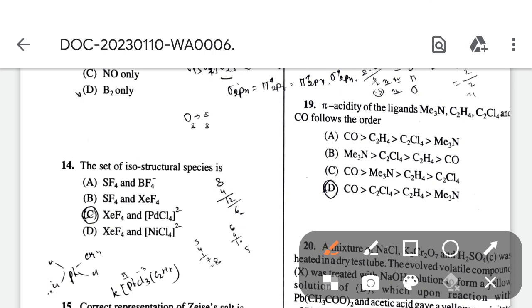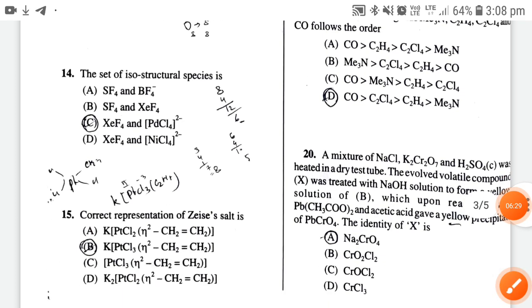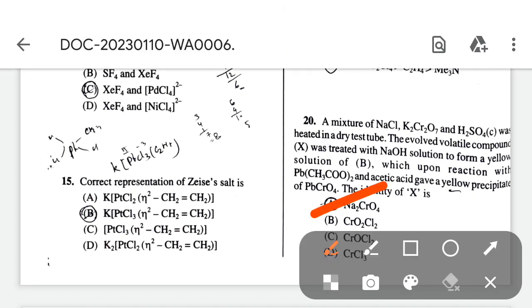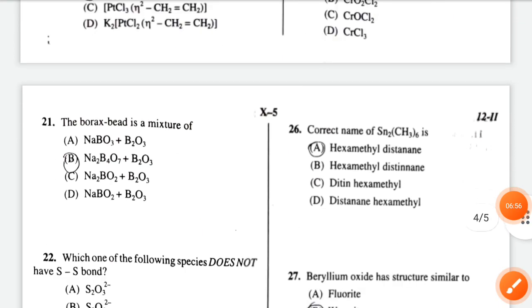Question 20: a mixture of NaCl, K₂Cr₂O₇, and H₂SO₄ was heated in a dry test tube. The evolved volatile compound was treated with any solution to form a yellow solution of B, which upon reaction with lead acetate and acetic acid gave a yellow precipitate of PbCrO₄. The identity of compound is option A. The borax bead mixture is a mixture of Na₂B₄O₇ and B₂O₃.